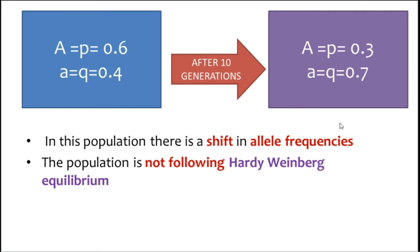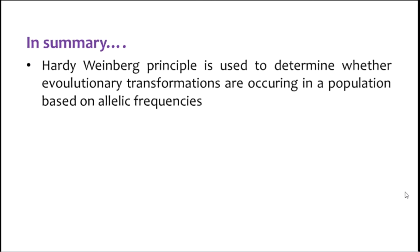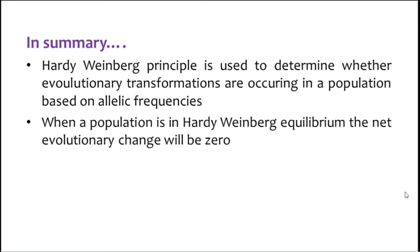It does not mean that all these factors are occurring together — a single factor or combinations of these factors may be responsible for the change in allelic frequencies. In summary, the Hardy-Weinberg principle is used to determine whether evolutionary transformations are occurring in a population based on allelic frequencies. When a population is in Hardy-Weinberg Equilibrium, the net evolutionary change will be zero. The two associated equations and related problems will be discussed in the next sessions.